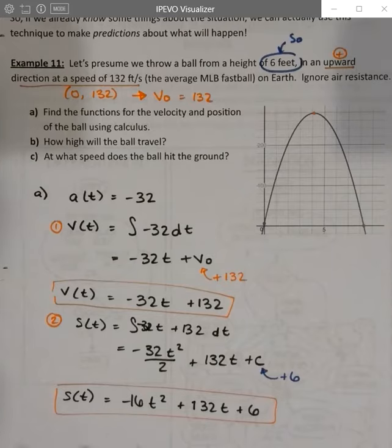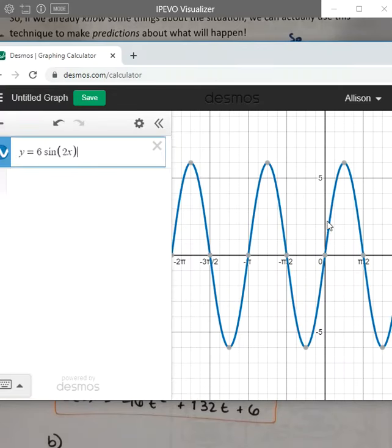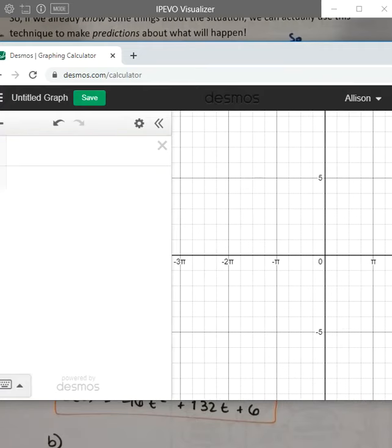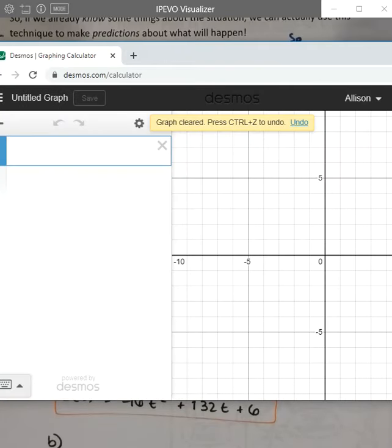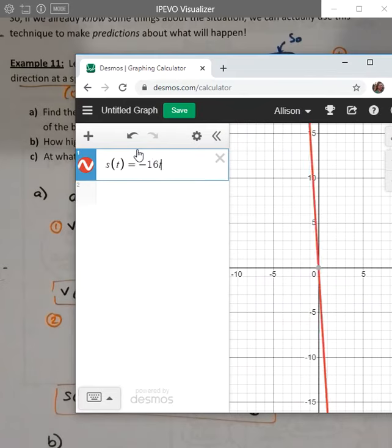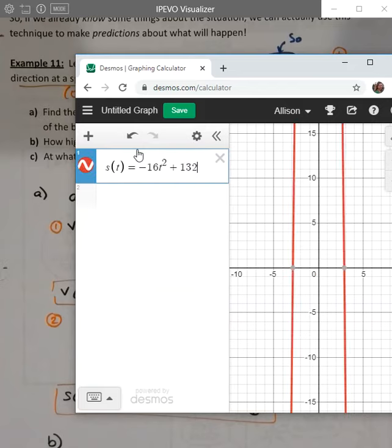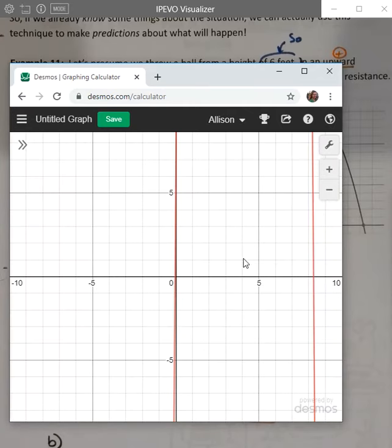In part b, they want to know how high the ball will travel, and then at what speed does it hit the ground. So I'm going to grab some calculator action to finish answering these questions. I got the parabola, so I can graph it. I'm just going to do new graphs. So new little bitty graph here, but we can just call s-of-t equals negative 16t squared plus 132t plus 6.